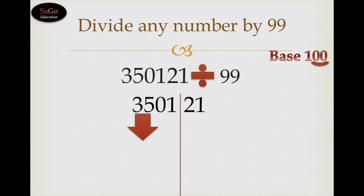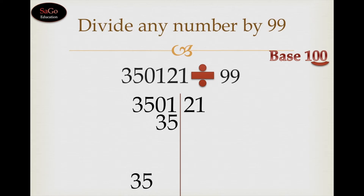The very first step remains the same — we write down the first two digits of the dividend as it is. Write down 35. Now this 35 would be added under the next two digits, which is 1 and 2. We write 0 plus 3 is 3, write 3.